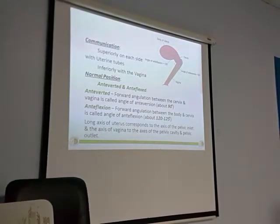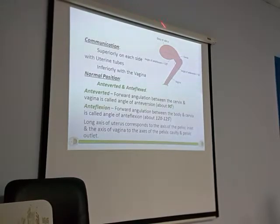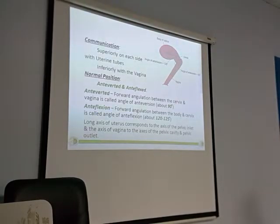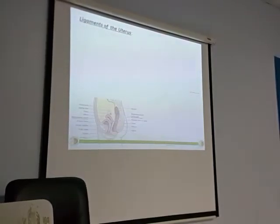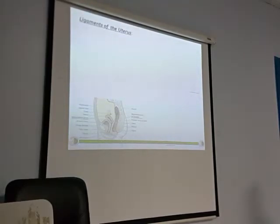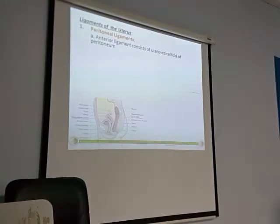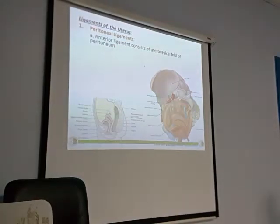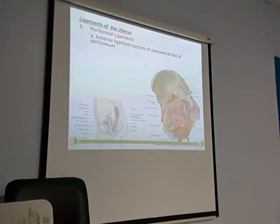Coming to this, it leads to prolapse of the uterus. So you should know what are the structures which are holding the uterus in its position. If it is not held in its proper position, then it will lead to prolapse. There are important ligaments which will be holding the uterus in its position. One type is the peritoneal ligaments — like the anterior ligament, which consists of the uterovesical fold of the peritoneum. You can see here — this is a thin membrane which is covering the uterus and the bladder.